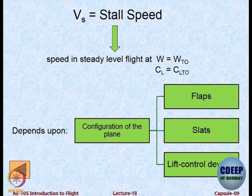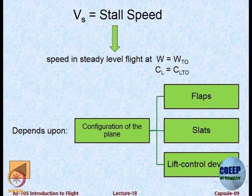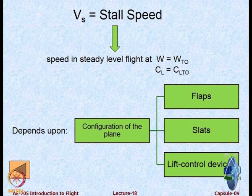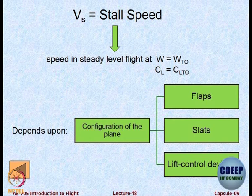The first speed is VS, the stalling speed in steady level flight. This depends on aircraft configuration — whether flaps are up or down, how much they are deflected, whether slats are operating, and other lift control devices available. All of them affect the value of stalling speed.